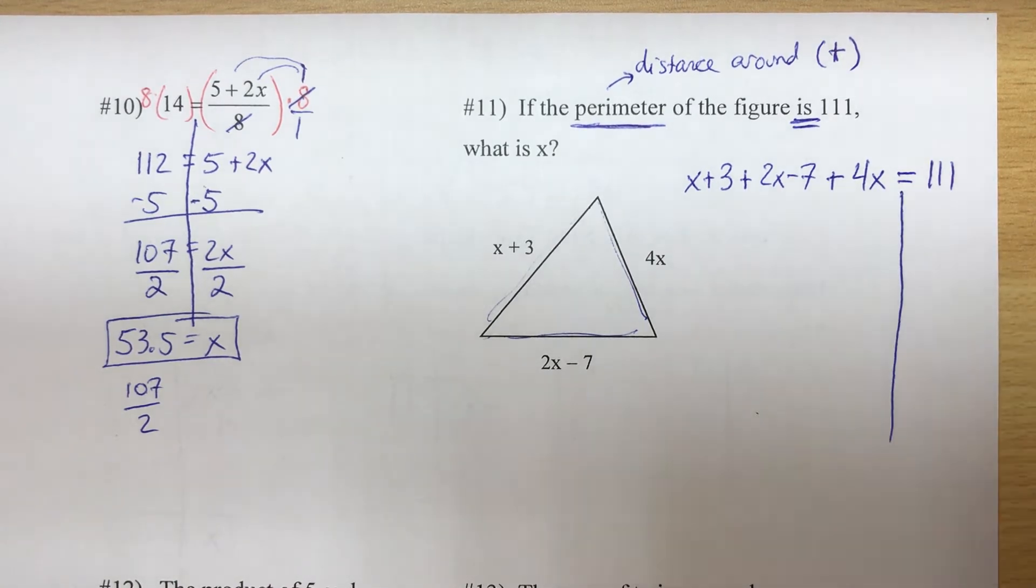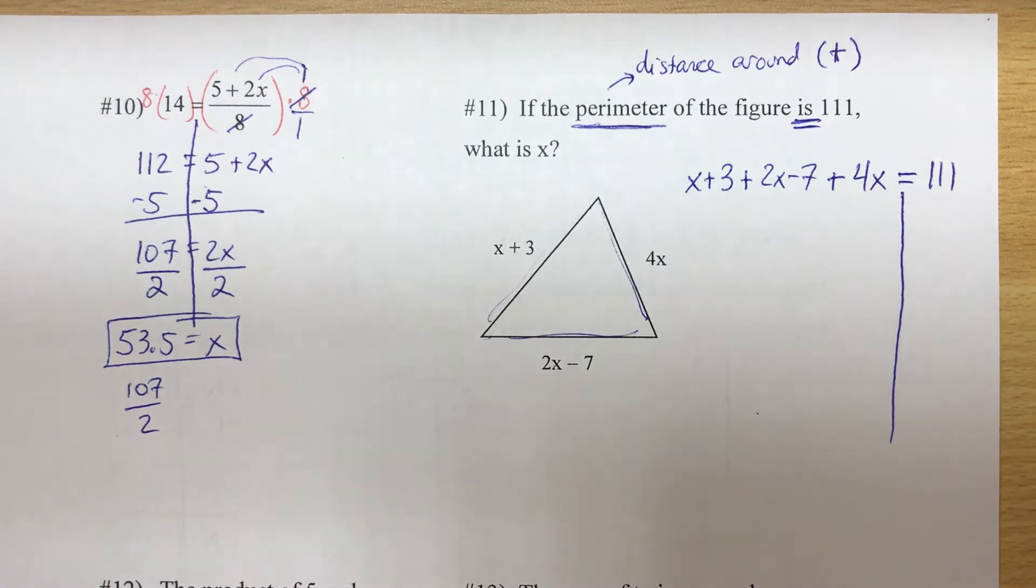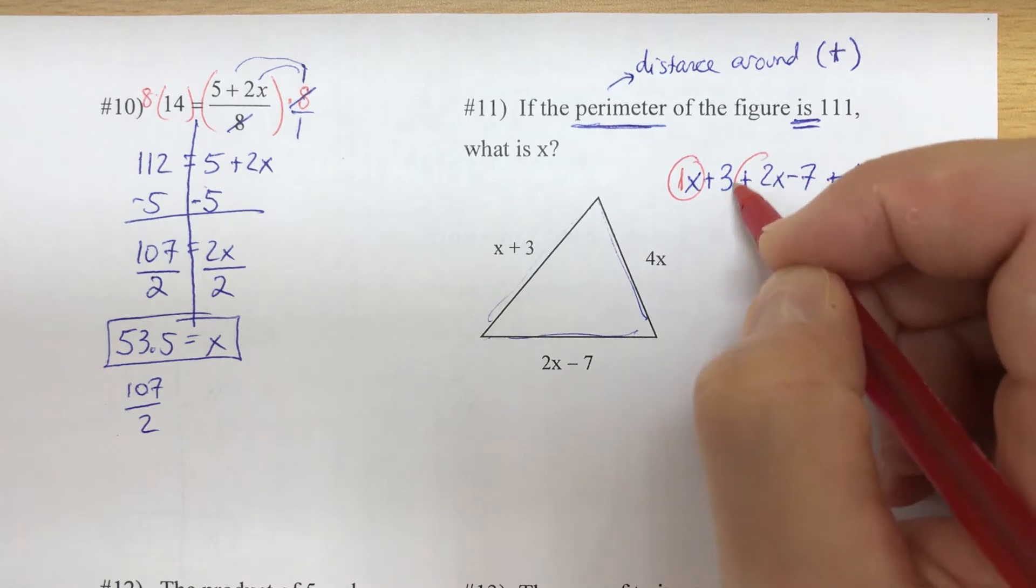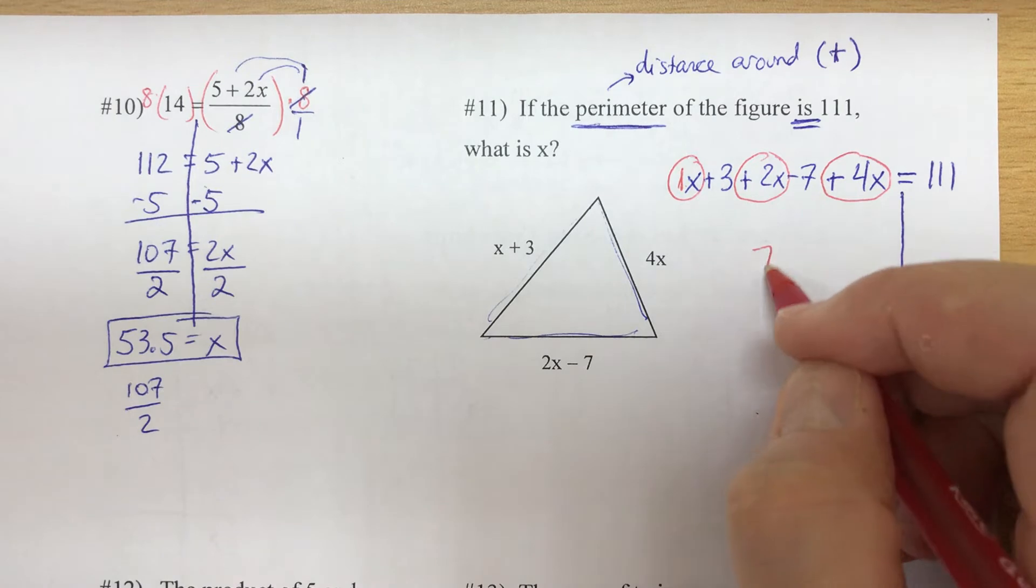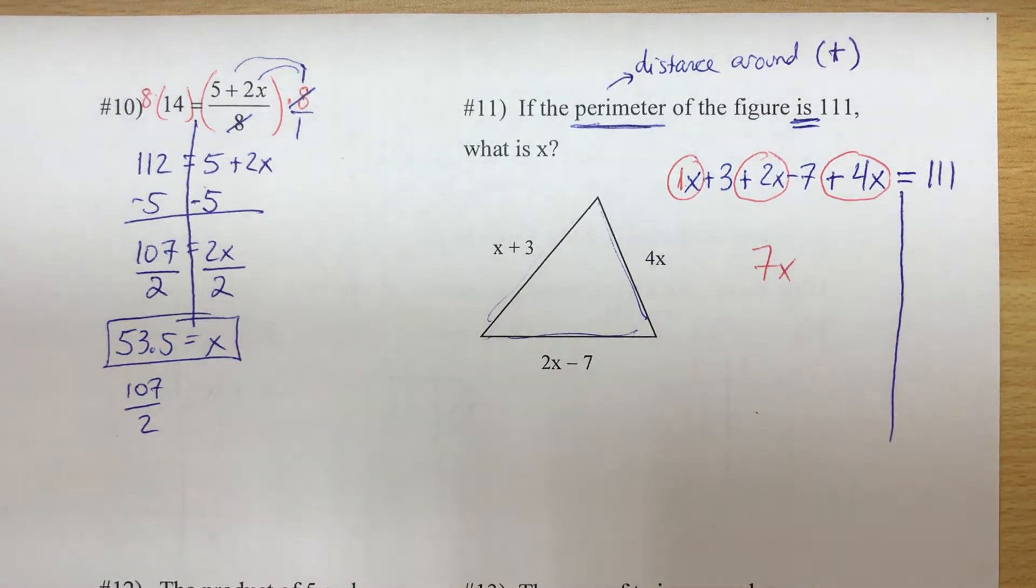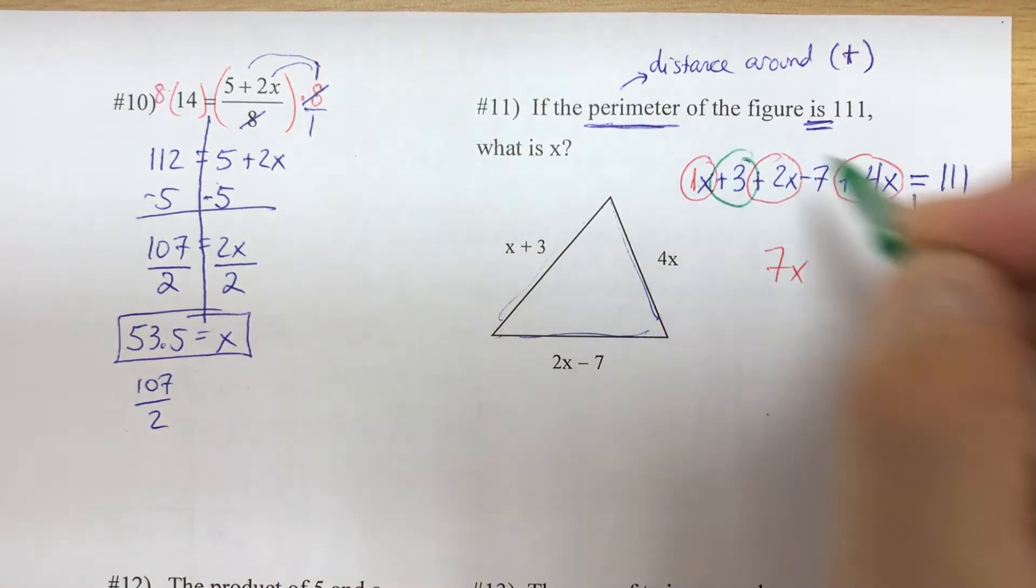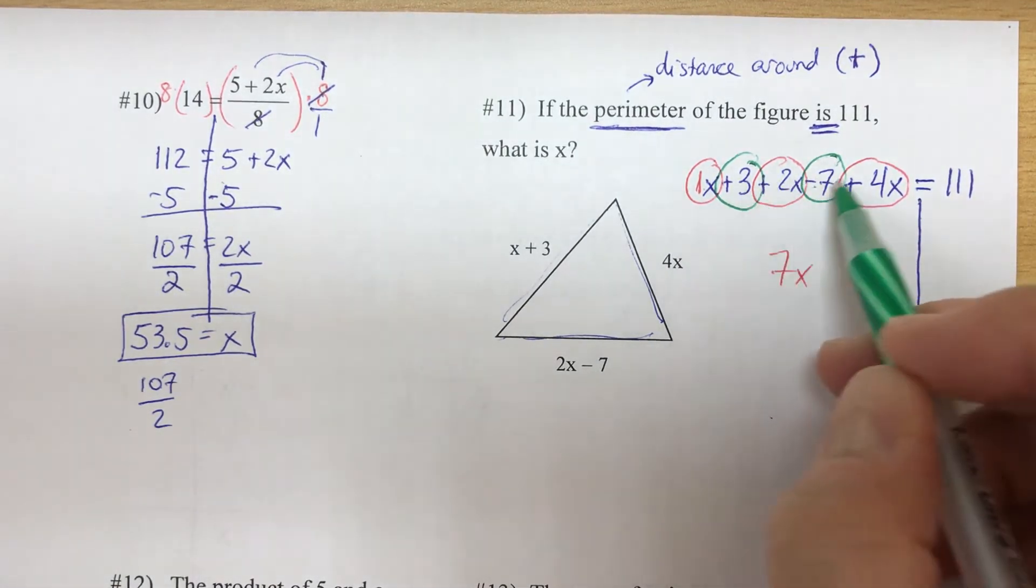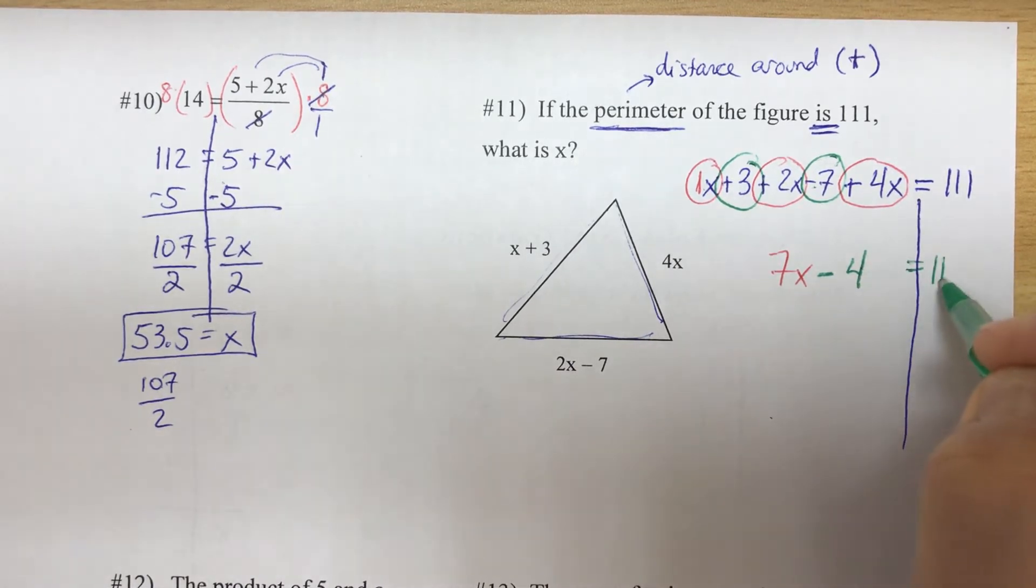Now to solve this, before we start moving things to the right side, let's combine our like terms. We have 1x plus 2x plus 4x - 1 plus 2 plus 4, we have 7x. And then we also have some constants: we have positive 3 and we have negative 7. That negative is with the 7. 3 minus 7 is minus 4, so we get 7x minus 4 equals 111.